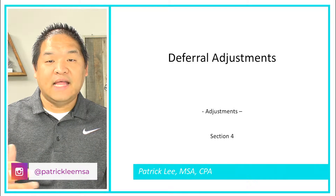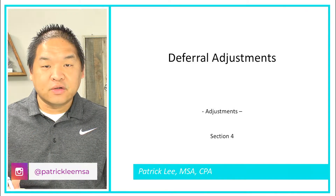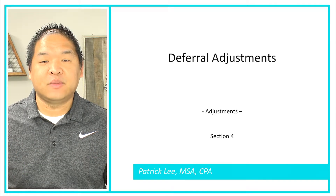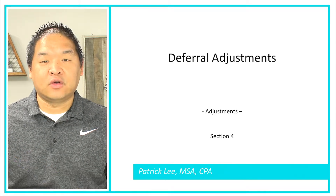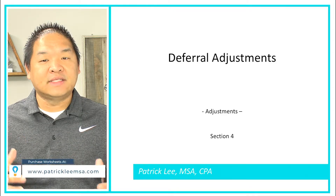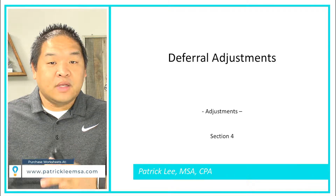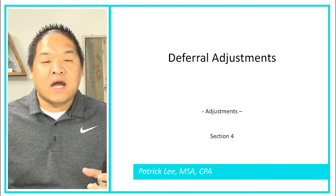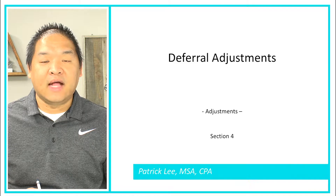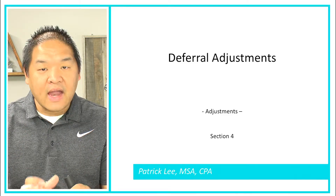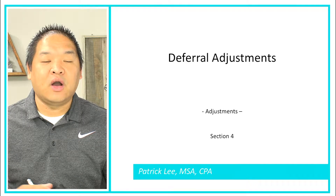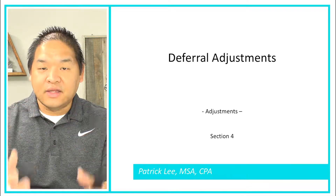In this lesson we are going to look at deferrals. In the last lesson we told you that there are really two major types of adjustments: accruals and deferrals. In this lesson we're only going to concentrate on the deferrals, and then in subsequent lessons we're going to break down the deferred expenses and the deferred revenue. Once we do that, we'll talk about accruals and do the same thing as we're doing on the deferrals.